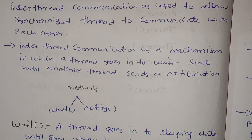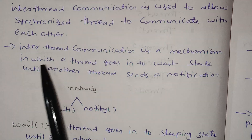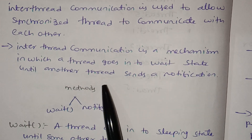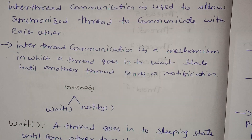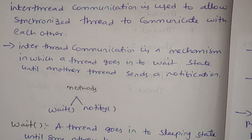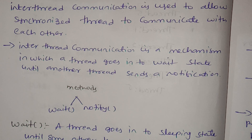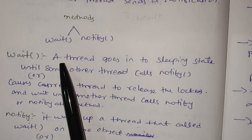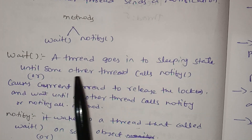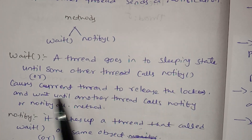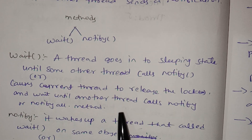Inter-thread communication is a mechanism in which a thread goes into a wait state until another thread sends a notification. We use synchronized thread methods. The wait method causes the current thread to release the lock and wait until another thread calls notify or notifyAll.